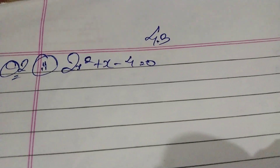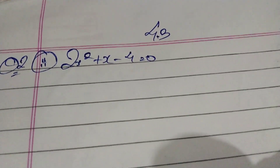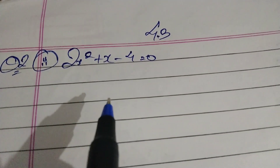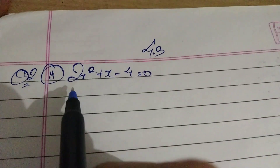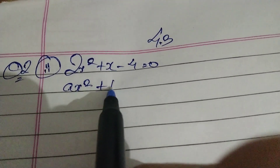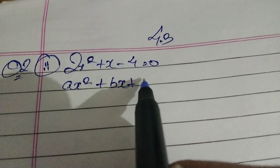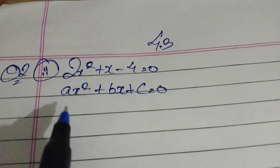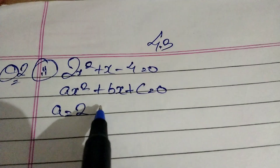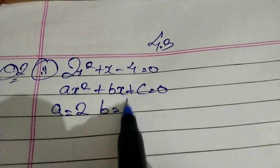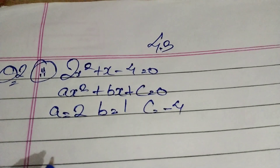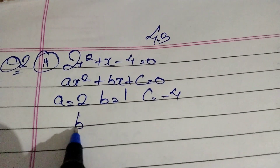We are going to do exercise 4.3, question number two, serial number two. Let's compare the question with the standard equation: ax² + bx + c = 0. So a will be 2, b will be 1, c will be minus 4. The formula for this is b² minus 4ac for comparing the roots.